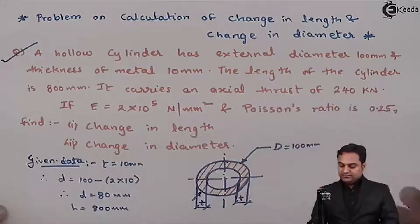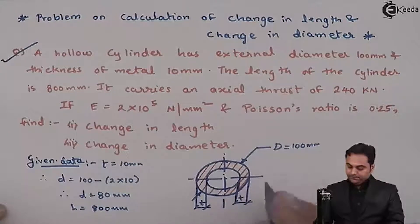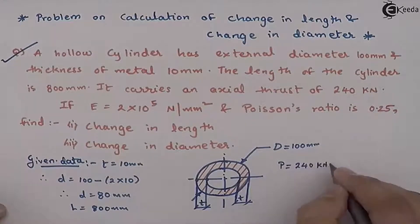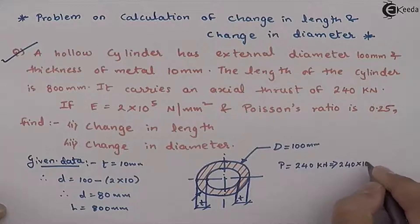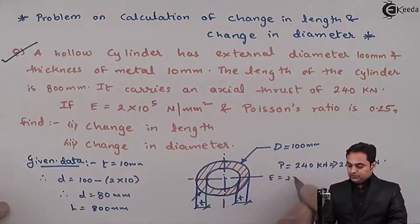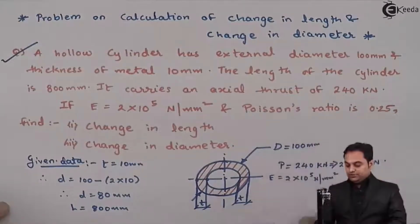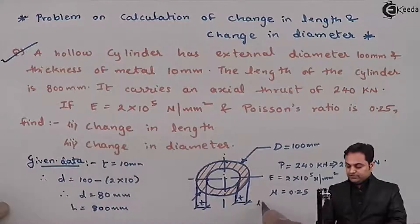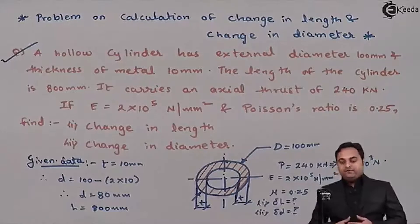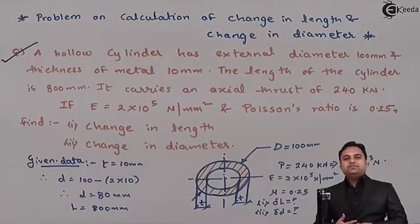It carries an axial thrust — axial thrust means axial load — P = 240 kN = 240×10³ N. Young's modulus E = 2×10⁵ N/mm² and Poisson's ratio μ = 0.25. We have to find: first, the change in length; and second, the change in diameter.